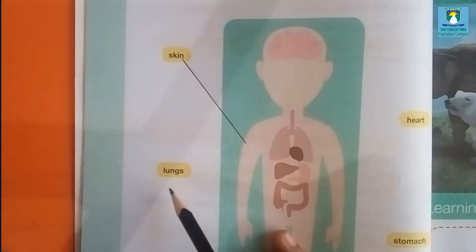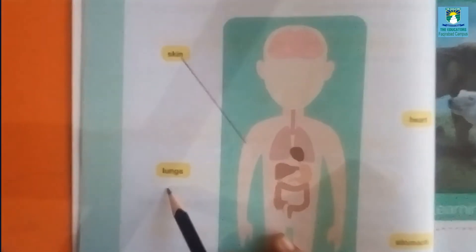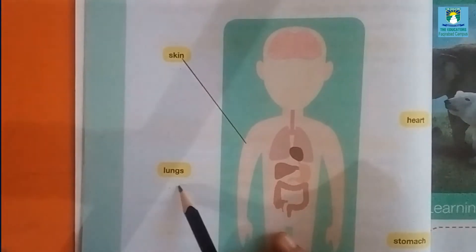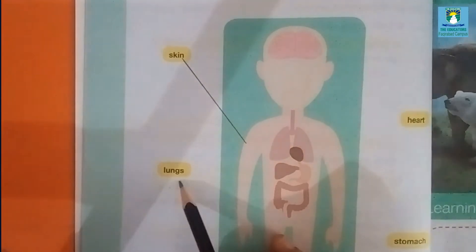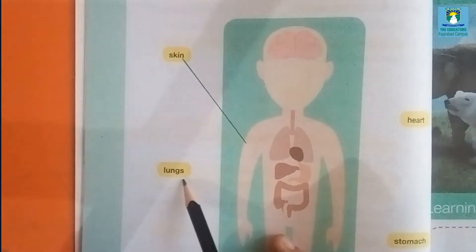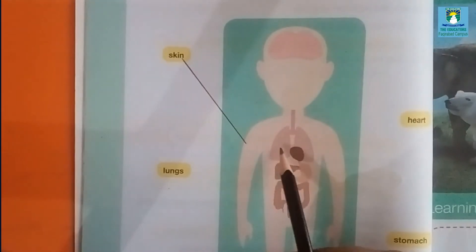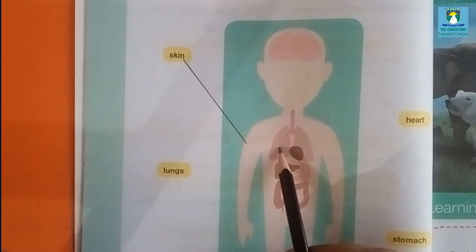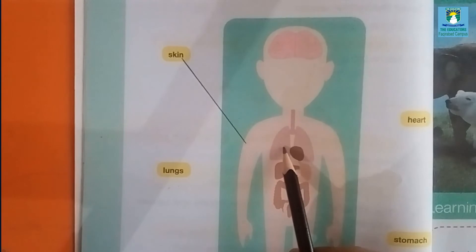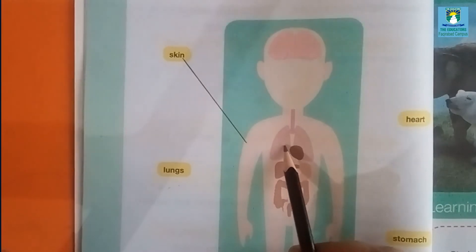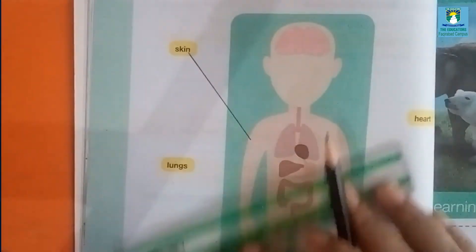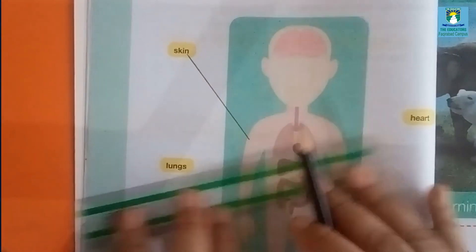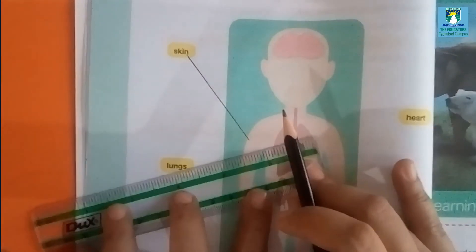Second is lungs. Lungs are used for breathing. It is an internal organ present inside the body. You can match it with lungs.